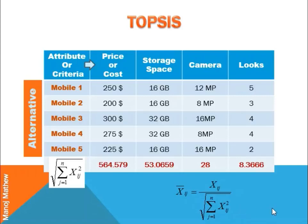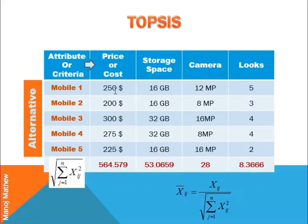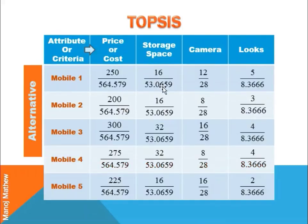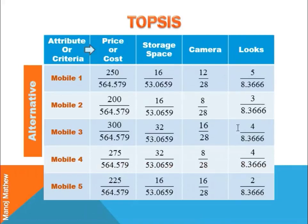The performance value in each cell is divided by the rooted summation of squared values. Here we can see that 250 is divided by 564.579. Similarly, 16 is divided by 53.065, 9 is divided by 29, and 5 is divided by 8.3666. We do this for all cells to obtain the normalized decision matrix.